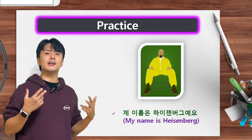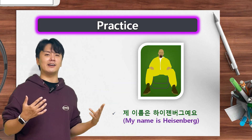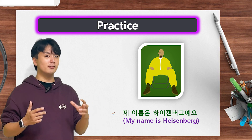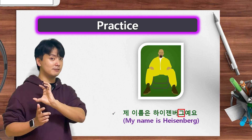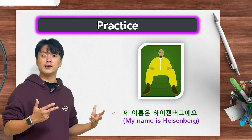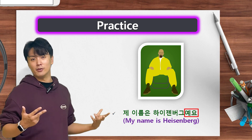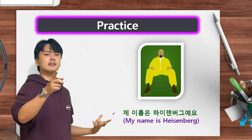So let's say my name is Heisenberg. Because Heisenberg ends with 그, which is a vowel, you say 제 이름은 Heisenberg 예요. You got it? You're goddamn right.